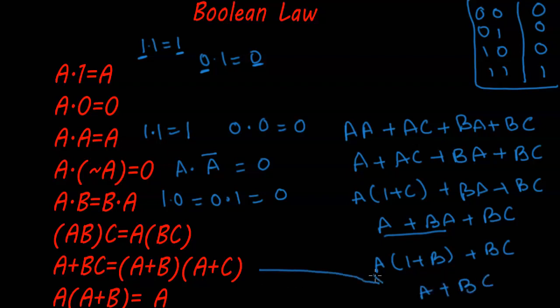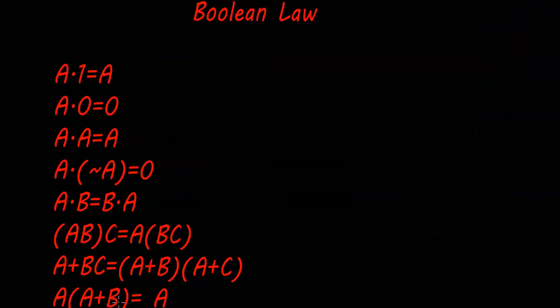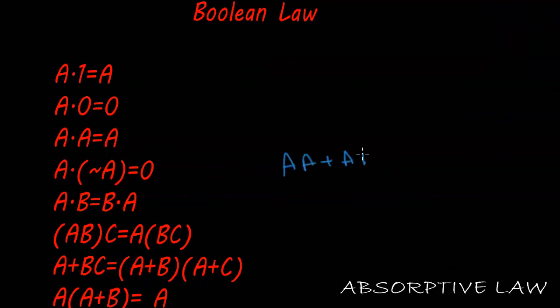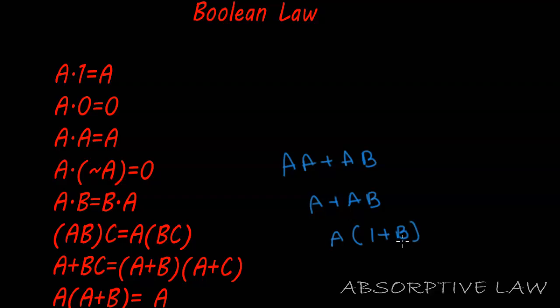Moving to the Absorbing Law: a(a plus b). Opening the bracket we get a·a plus a·b. Now a dot a equals a itself, so we have a plus ab. Taking a common: a(one plus b). Using the Null Law, one plus any number is one itself, so we get a.